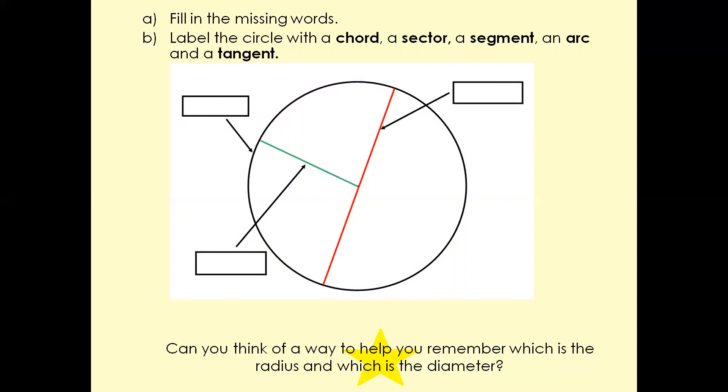Let's mark the answers. The red line is called a diameter. The green line is called a radius. The whole boundary of the circle is called the circumference. The blue line is called a chord. This section is called a sector, and this one is called a segment.